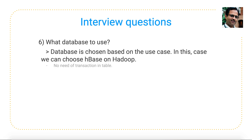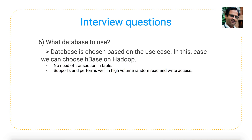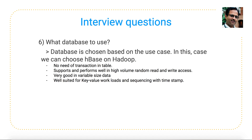The sixth question is: what database to use? I recommend HBase running on Hadoop. We don't use RDBMS because there are no transactions involved. HBase is chosen for several reasons: first, no need for transactions on the table; second, it performs very well for high-volume read and write operations; third, it handles variable-size data well — messages in WhatsApp can be one line or ten lines. Fourth, it is well suited for key-value workloads with timestamp-based sequencing. Finally, HBase on Hadoop is highly scalable because it runs on the HDFS distributed infrastructure.